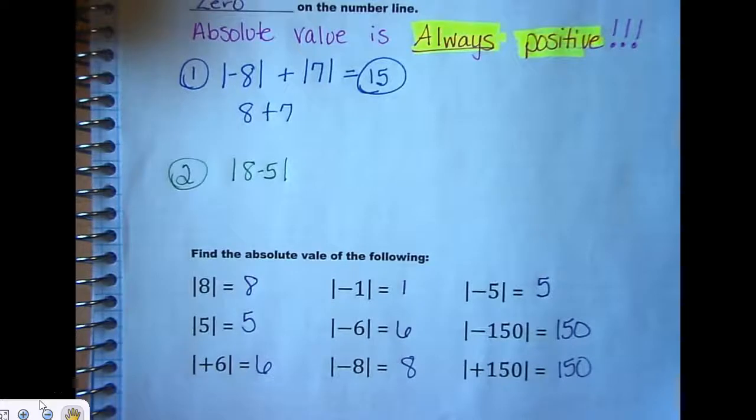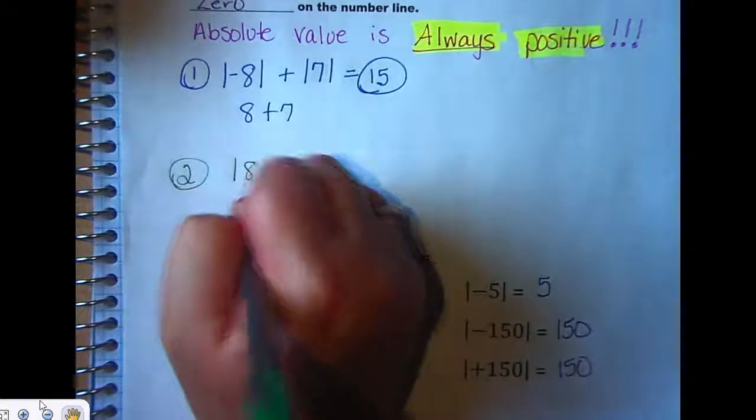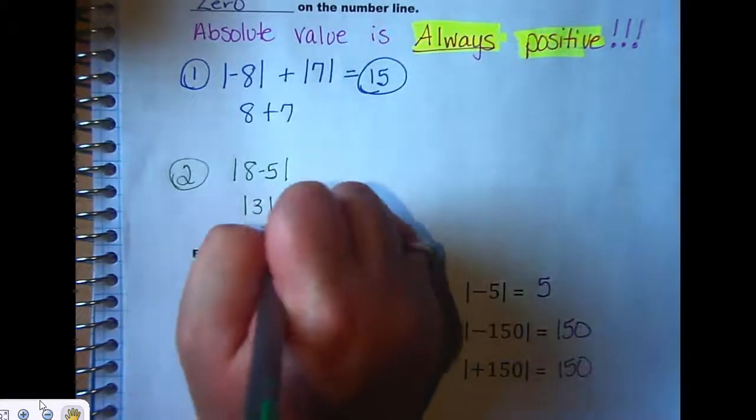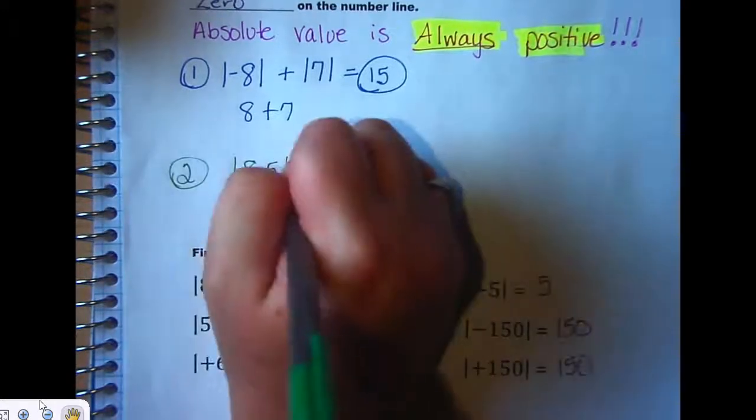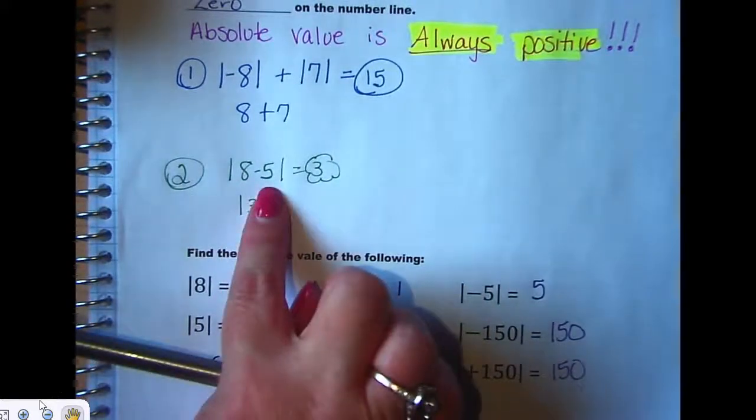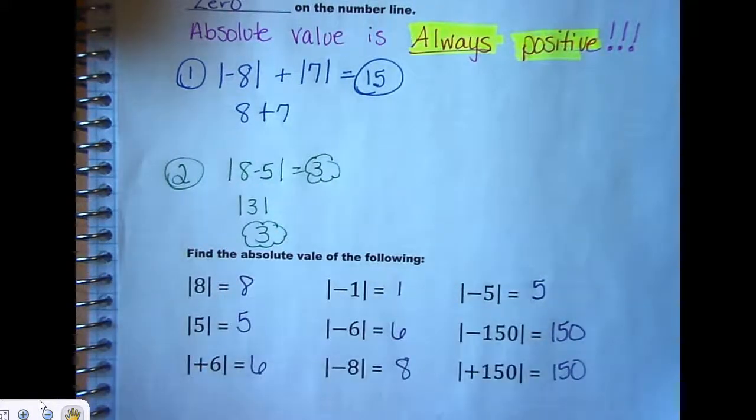Absolute value of 8 minus 5. Again, this is like parentheses. If there were more in the problems, you have to do what's inside that grouping symbol first. So, what is 8 minus 5? 3. So, what's the absolute value of 3? 3. So, if there's math to do inside, you do the math first. And then you find the absolute value of your answer. Does that make sense?